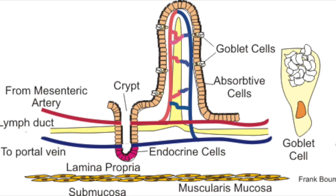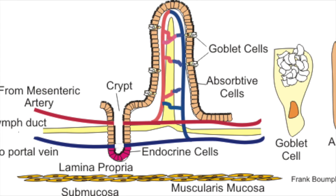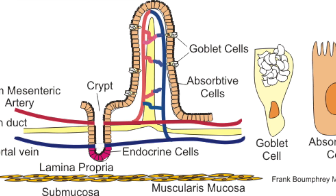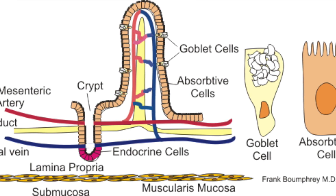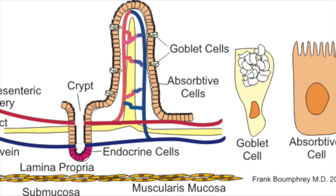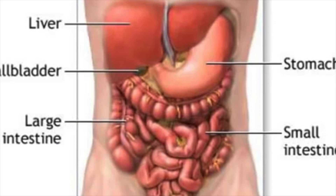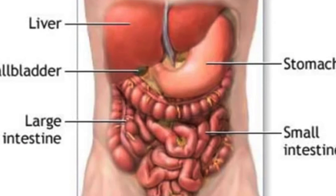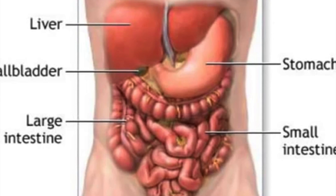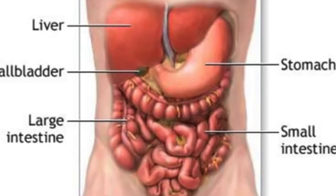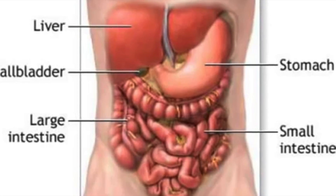The lining of the small intestine has an excellent blood supply, which carries away the digestive food once they have been diffused. This means that diffusion is very effective down the concentration gradient.